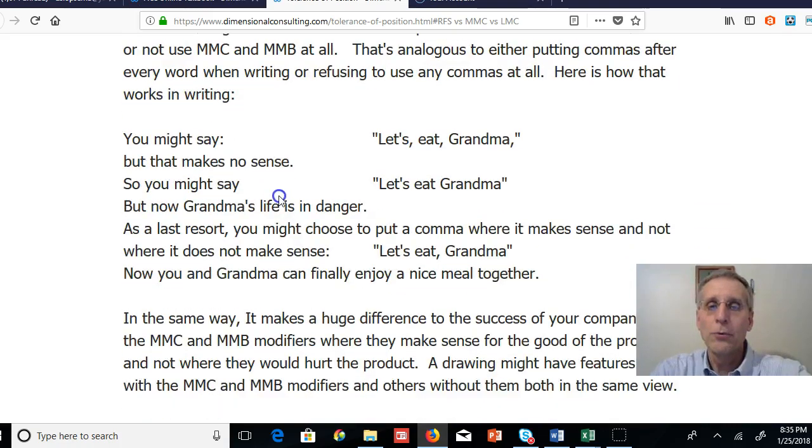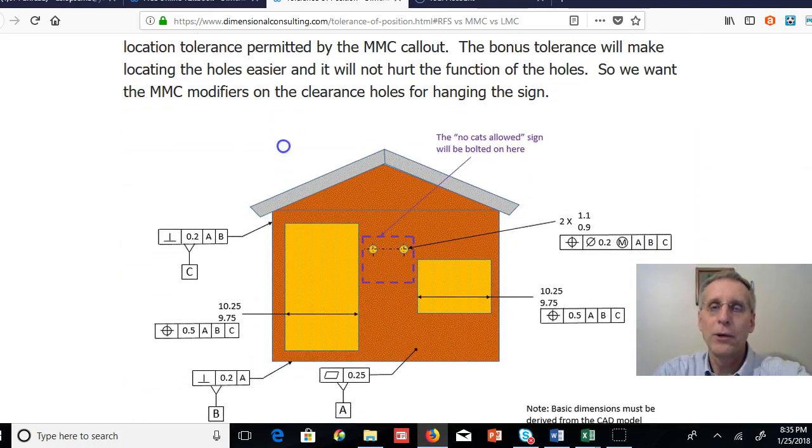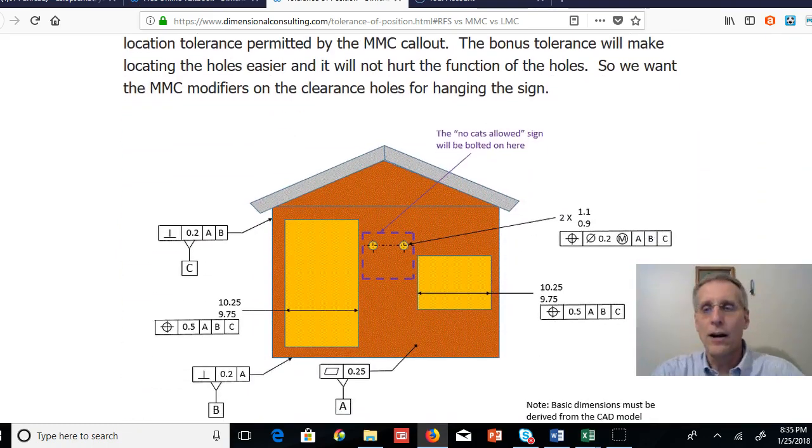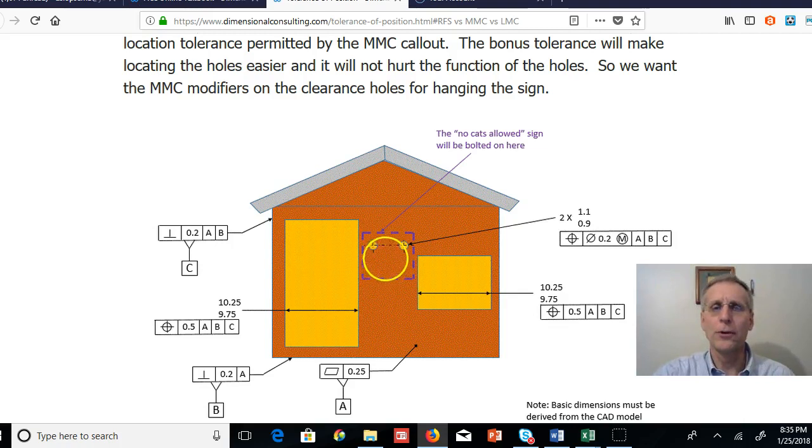So for example we're going to take a look at a doghouse we may want to build. Our doghouse has a door and has a window and it has a little area in between we're going to hang a sign. The sign is going to say no cats allowed. Now where we hang this sign we're going to have a couple of clearance holes and then the sign will have a couple of clearance holes and we'll line up the clearance holes in the sign with the clearance holes in the wall and we'll put a couple of bolts through, put some nuts on the other side and that's how we'll attach our sign.